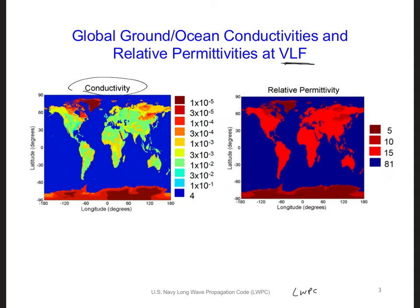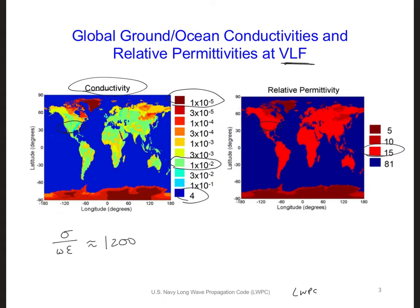Looking at the left map corresponding to conductivities, we can see that there are a wide range of values, ranging from 4 for the oceans to 1×10⁻⁵ for ice and snow. For much of the U.S. and other parts of the world, the ground conductivity is about 1×10⁻² Siemens per meter, which corresponds to green, as you can see throughout much of the U.S. The relative permittivity is 15 for much of the U.S. and other parts of the world. The loss tangent — sigma over omega epsilon — for this type of ground is about 1,200, which indicates that the ground in these regions can be approximated as a good conductor, because the loss tangent is quite a bit larger than 100.